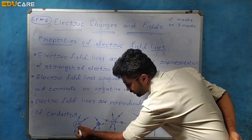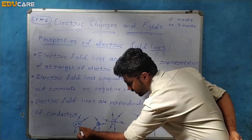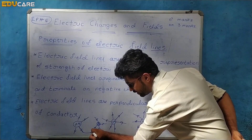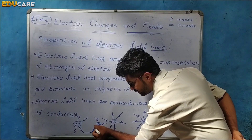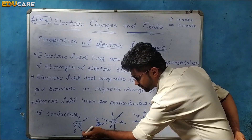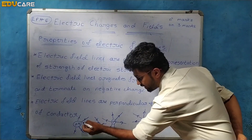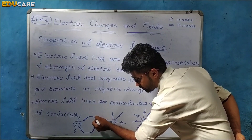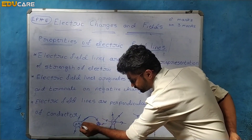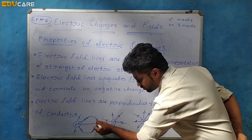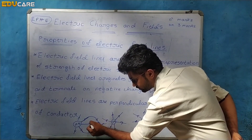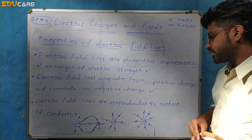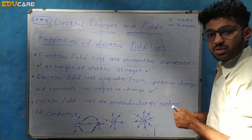The electric field lines originate from the positive charge and terminate at the negative charge. We can draw or represent this line accordingly. This property is now clear.